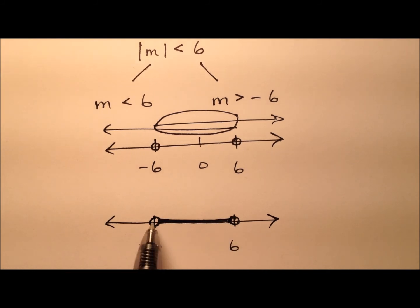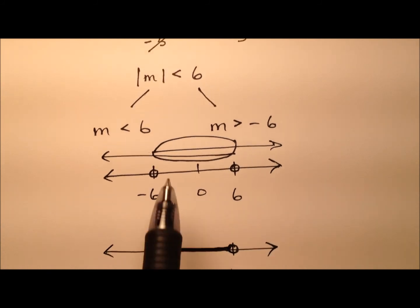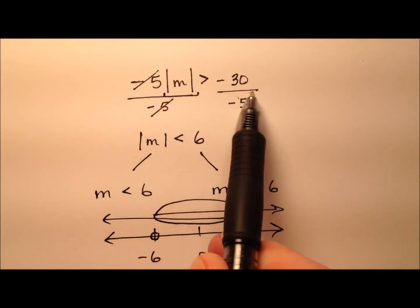So we're saying that every real number between negative 6 and 6, but of course not including those endpoints, all these numbers will be a solution to our original absolute value inequality.